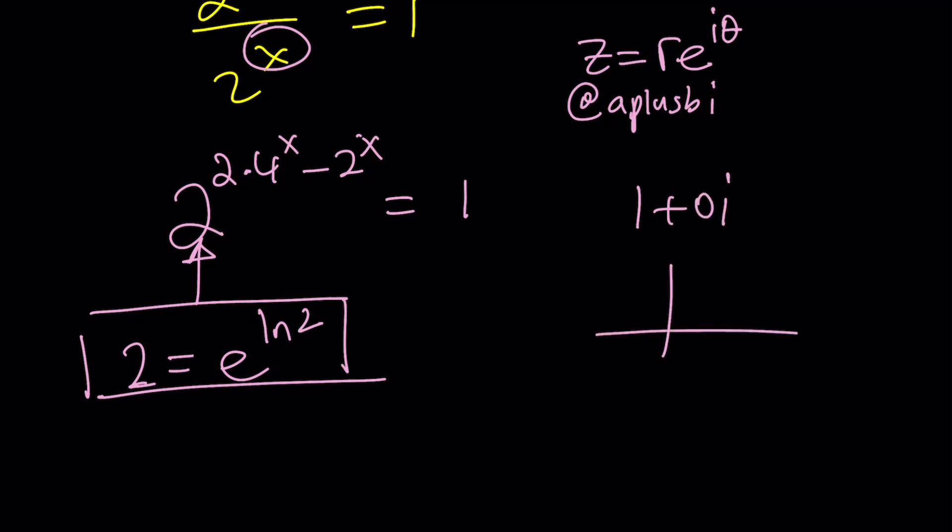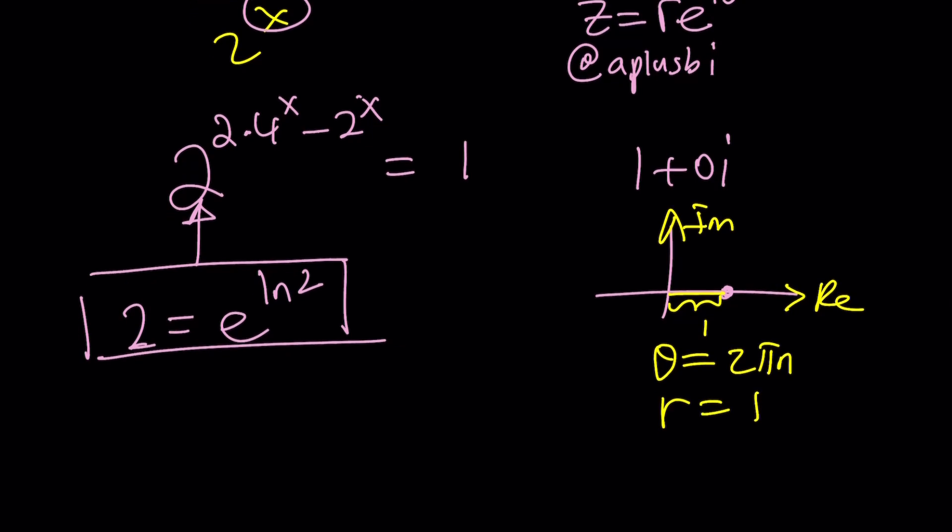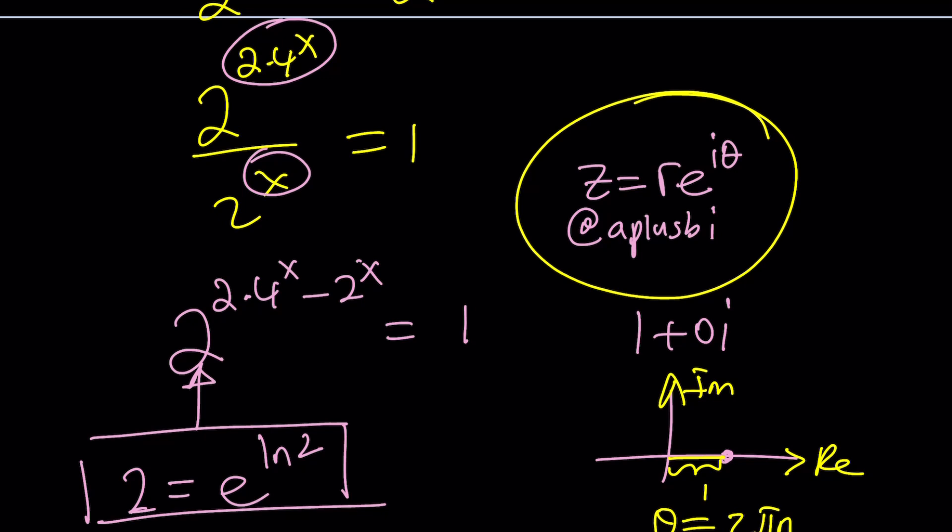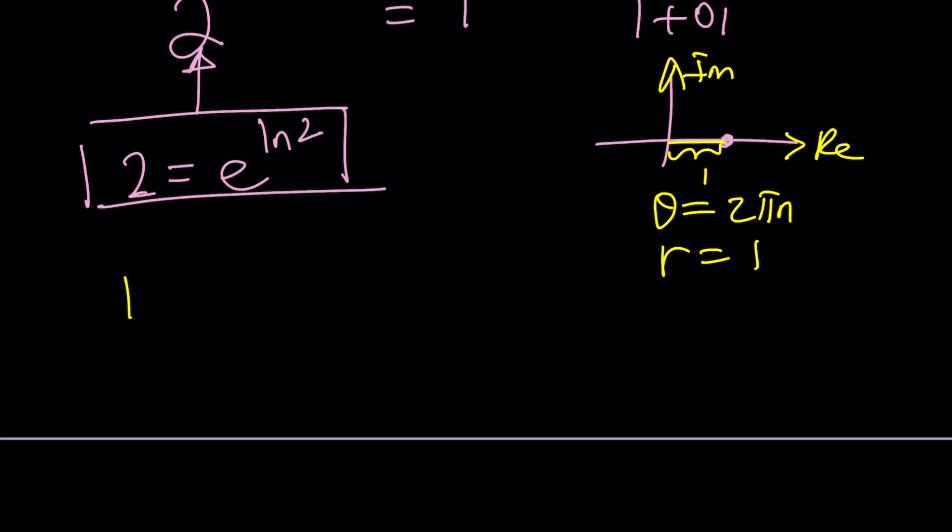Its modulus is going to be 1. And it makes 2 pi or 0 radians with the real axis. So theta is going to be 0, or let's just use 2 pi. Or we can use multiples of 2 pi, 2 pi n. And r is going to be 1. So 1 can be written as e to the power 2 pi n i.